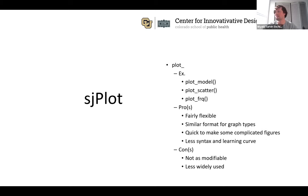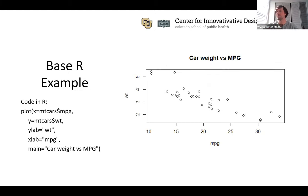sjplot uses `plot_()` functions — for example, `plot_model()` for a forest plot of a regression model, or `plot_scatter()` or `plot_frq()` for histograms. Pros: fairly flexible, similar format across graph types, quick to make complicated figures with less syntax, and a gentler learning curve than ggplot. Cons: not as modifiable and not as widely used — ggplot has many nice add-on packages that sjplot lacks.